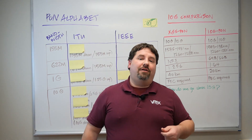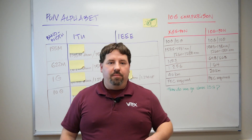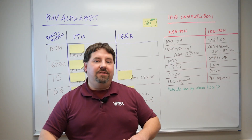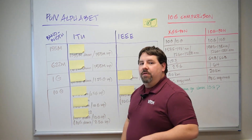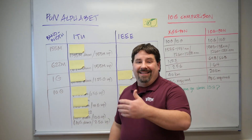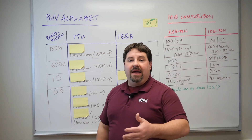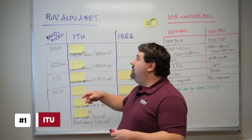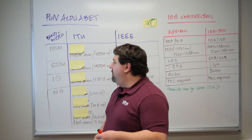There are a lot of acronyms in PON setups, but we're here to help you out with this PON alphabet soup. So let's go through our alphabet and give you a better understanding. We're going to look at these PON components mostly based on the different types of standard bodies. There are two main standard bodies when it comes to PON: the ITU and the IEEE.